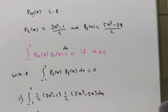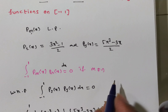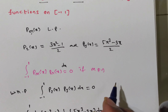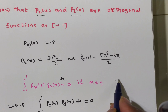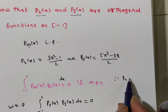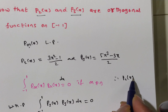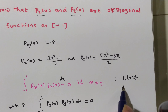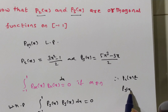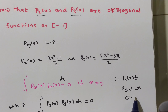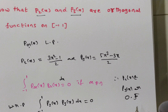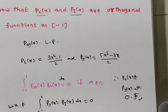Since the integral from minus 1 to 1 of P2 of X times P3 of X equals 0, therefore P2 of X and P3 of X are orthogonal functions. That's it — is it clear for everyone? Thank you for watching this video.